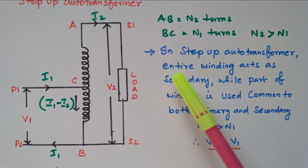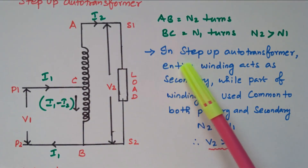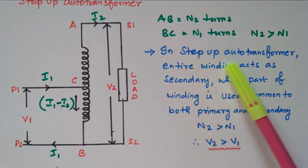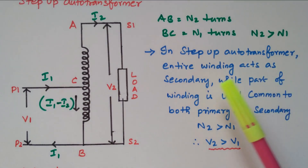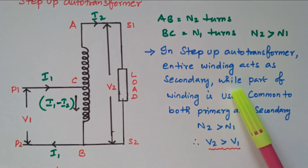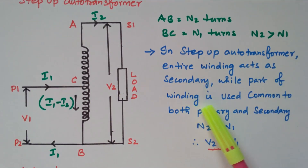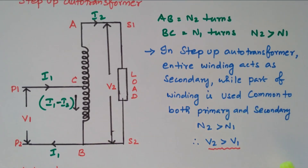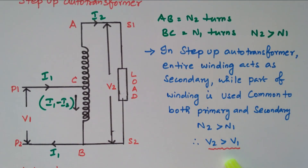In the step-up auto transformer, the entire winding acts as secondary while part of the winding is common to primary and secondary. Since N2 is greater than N1, V2 is greater than V1 — making it a step-up transformer.